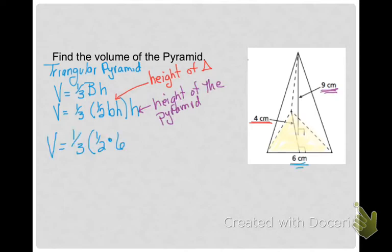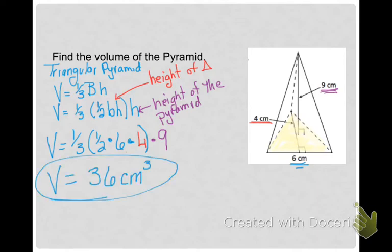So, volume equals one-third the area of the base, which is one-half times base, which is six, times the height of the triangle, which is four. The whole thing times the height of the pyramid, which is nine. Plug that in your calculator, and you get the volume of this pyramid is 36 centimeters cubed. Again, volume is always in cubic units.